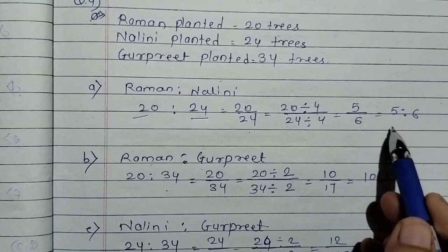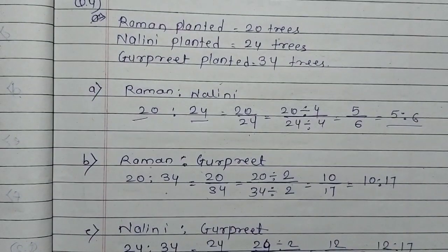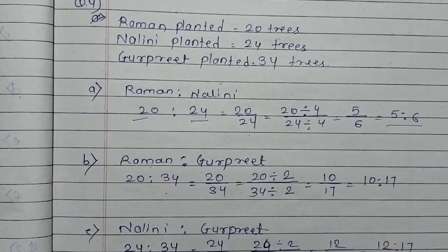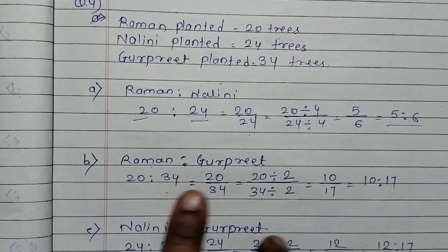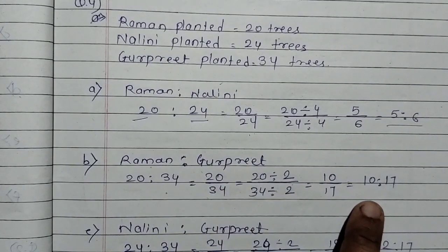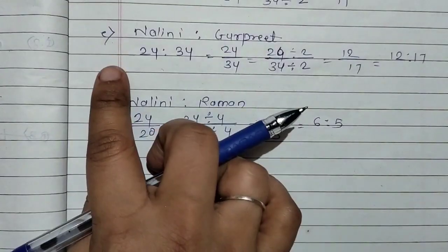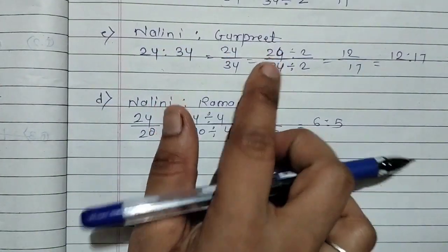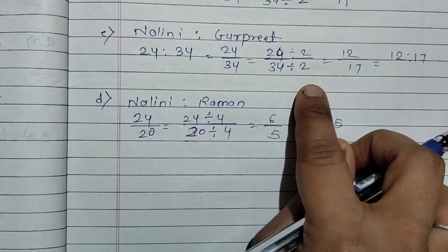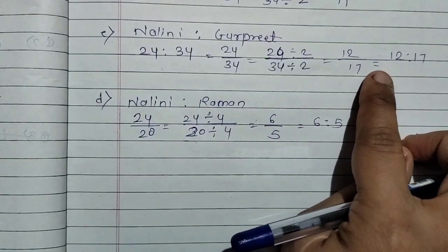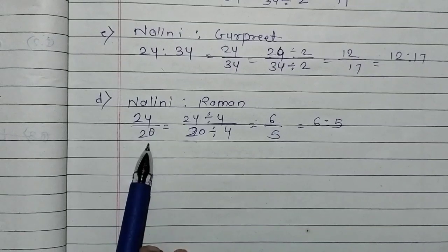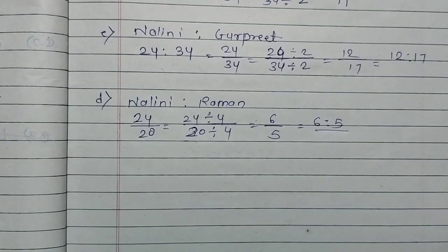So we get 5 upon 6, meaning 5 is to 6. Part b: Raman to Gurpreet. Raman is 20, Gurpreet is 34. These two numbers are divisible by 2. 2 into 10 is 20, 2 into 17 is 34. So answer is 10 is to 17. Part c: Nalini and Gurpreet. Nalini is 24, Gurpreet is 34. Both numbers are divisible by 2. 2 divides to get 12 is to 17. Part d: Nalini to Raman. So 24 upon 20, what do we get? 6 is to 5.